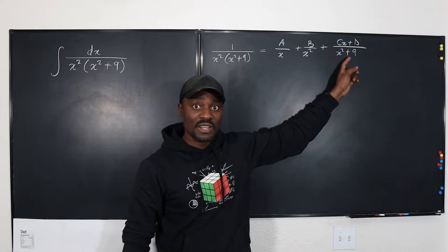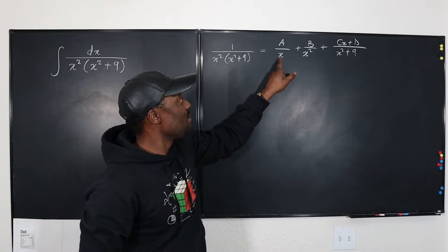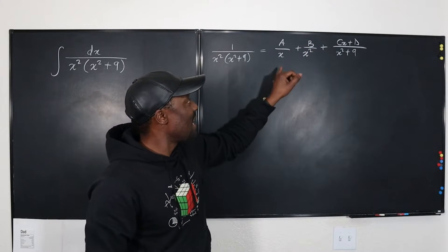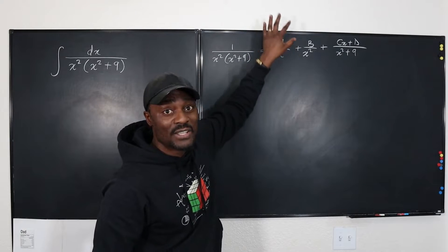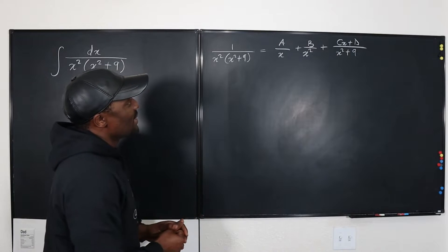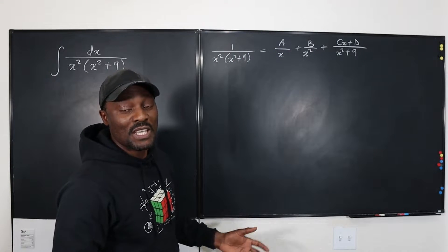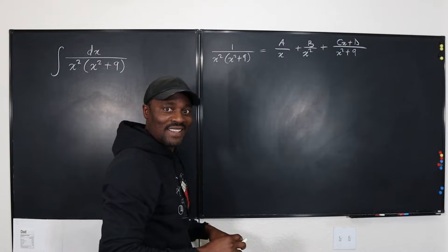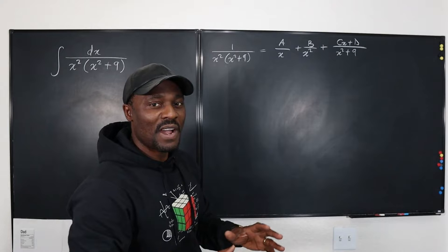Because I cannot break x squared plus 9 down to linear expressions, I have to always have one degree lower than the degree of the denominator. Because x is repeated, we can't say bx — just leave it as B. The good thing about partial fraction decomposition is that whatever is not supposed to be there will become zero. So if A becomes zero, then A over x gives you zero, and the same for the other terms. So I'm going to find all the values of A, B, C, and D.